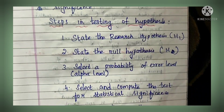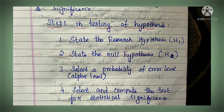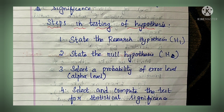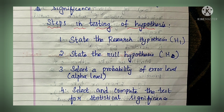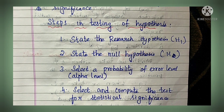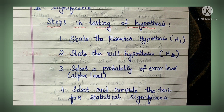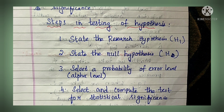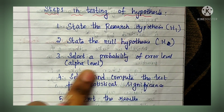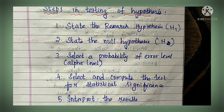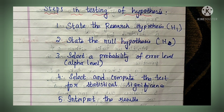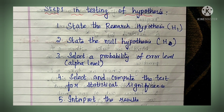First, we have to formulate the null hypothesis and research hypothesis. Then we have to set the significance alpha level. The null hypothesis is always represented by H0, and H1 means research hypothesis - also called the alternative hypothesis. The third step is to select a probability of error level, the alpha level. We mostly select 0.05, 0.01, or 0.001.